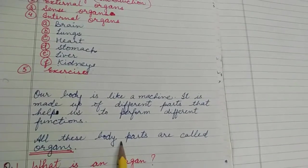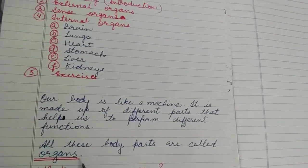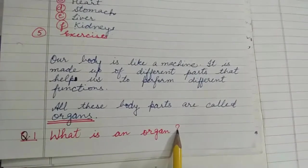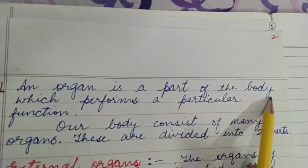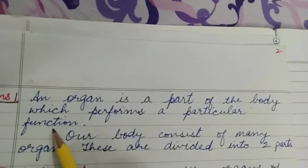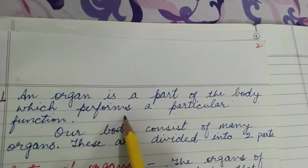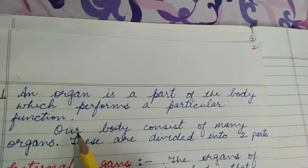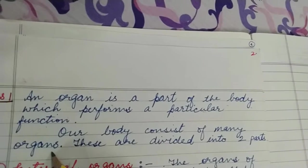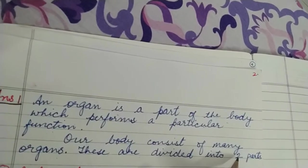In a computer you can see all the parts, but in our body some parts you cannot see. All these body parts are called organs. Now the question arises: what is an organ? An organ is a part of the body which performs a particular function. Our body consists of many organs.